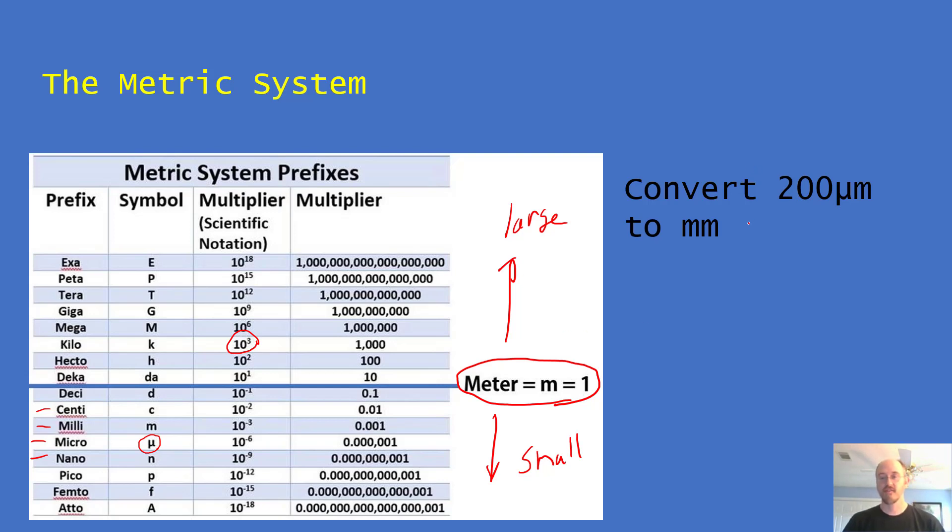So here's something for you to try. Convert 200 microns to millimeters. How would you do that? Well, you would find micron down here. Right here it is. It's 10 to the negative 6. You're going to convert it to this 10 to the negative 3. Well, notice how many decimal places are different here. In order to convert from one to the other, we're going to need to move a decimal place three times.